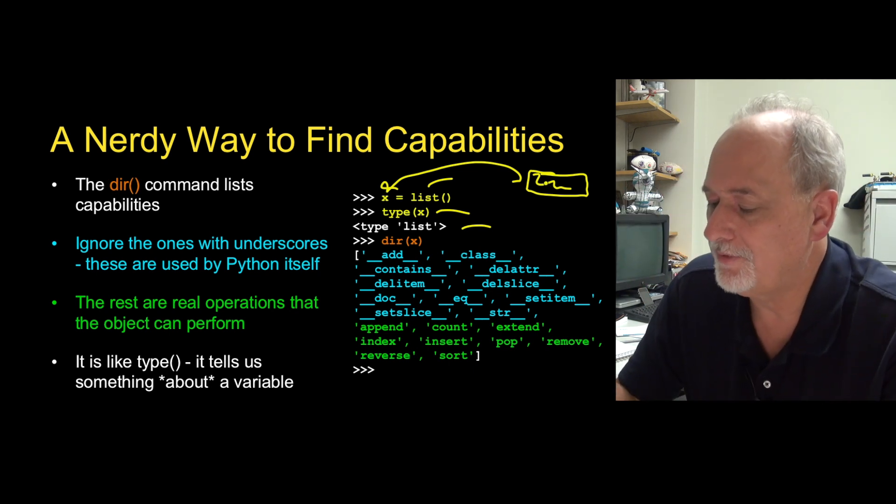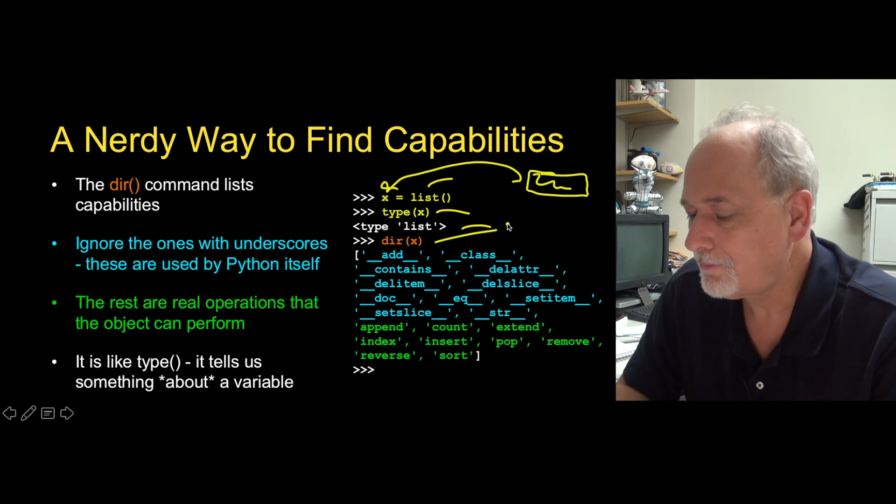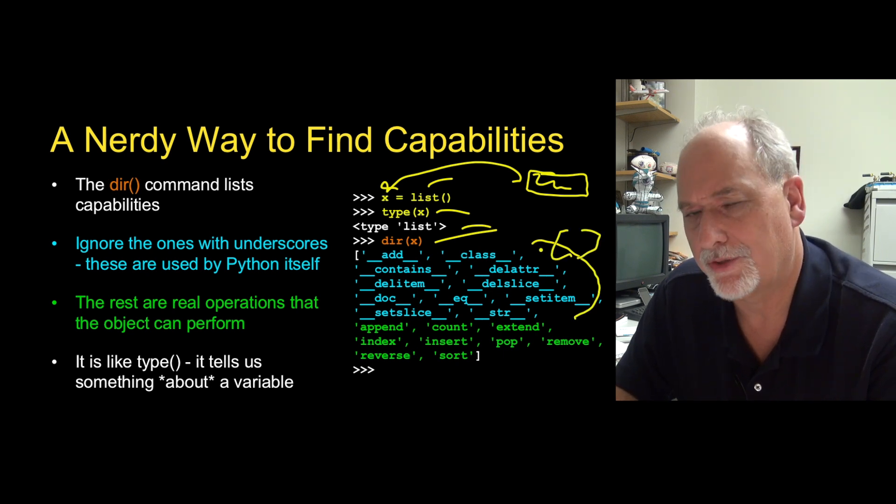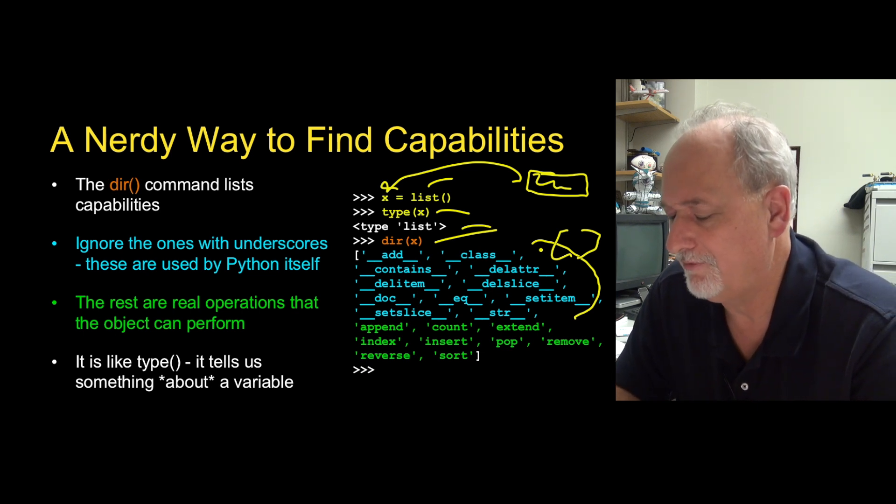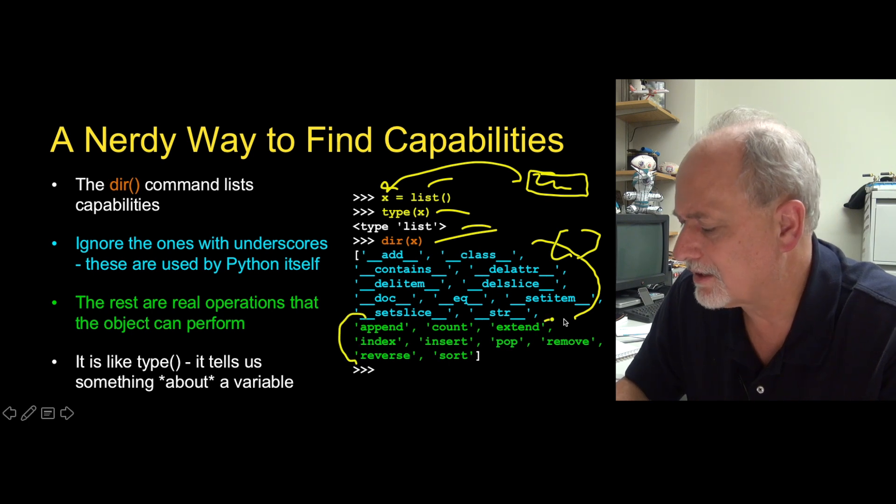And then the dir, if you remember the dir, the dir is the capabilities. And there's all these internal capabilities that do things like implement the bracket operator, et cetera, those double underscore ones. We can ignore them. Although you can even look them up and figure out what they mean if you feel like it.